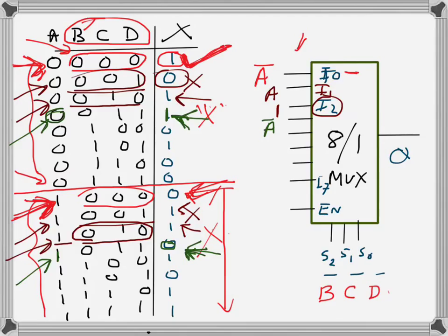For i4, selected when BCD=100: when A=0 the output is 0, and when A=1 the output is 1. The output follows the input, so I will connect just A to i4.